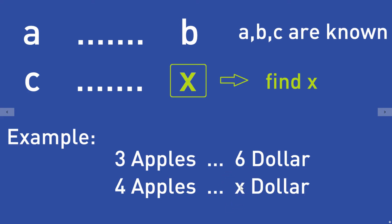So you want to find the value X — the money you need to buy 4 apples. After you have rewritten your problem this way, you have to check something.